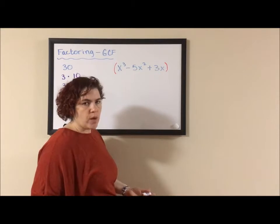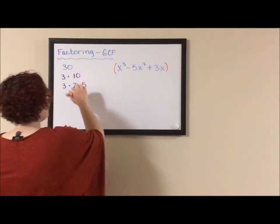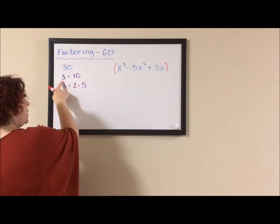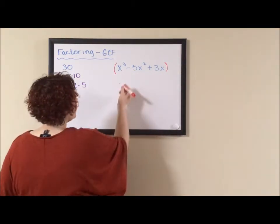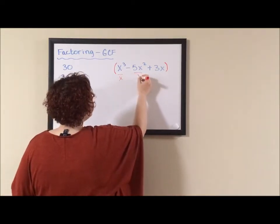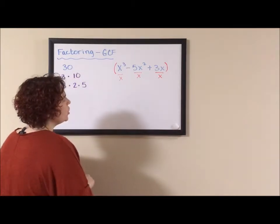Sometimes, especially with more complicated problems though, it's easier to think when you're factoring out the 3, you're dividing 30 by 3. So if I'm factoring out an x, I'm really factoring a single x, dividing a single x out of each term.